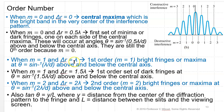When m equals 1 and delta r equals lambda, you get the first order — m equals 1 bright fringes — occurring at the angle of the inverse sine of lambda over d above and below the central axis. These are called maxima. When m equals 1 and delta r equals 1.5 wavelengths, you get destructive interference and the first order dark fringes at theta equals the inverse sine of 1.5 lambda over d on either side. When m equals 2 and delta r equals 2 wavelengths, you get the second order maxima at theta equals the inverse sine of 2 lambda over d. You can always use tangent theta equals y over L, where y is the distance from the center to the fringe and L is the slit-to-screen distance.